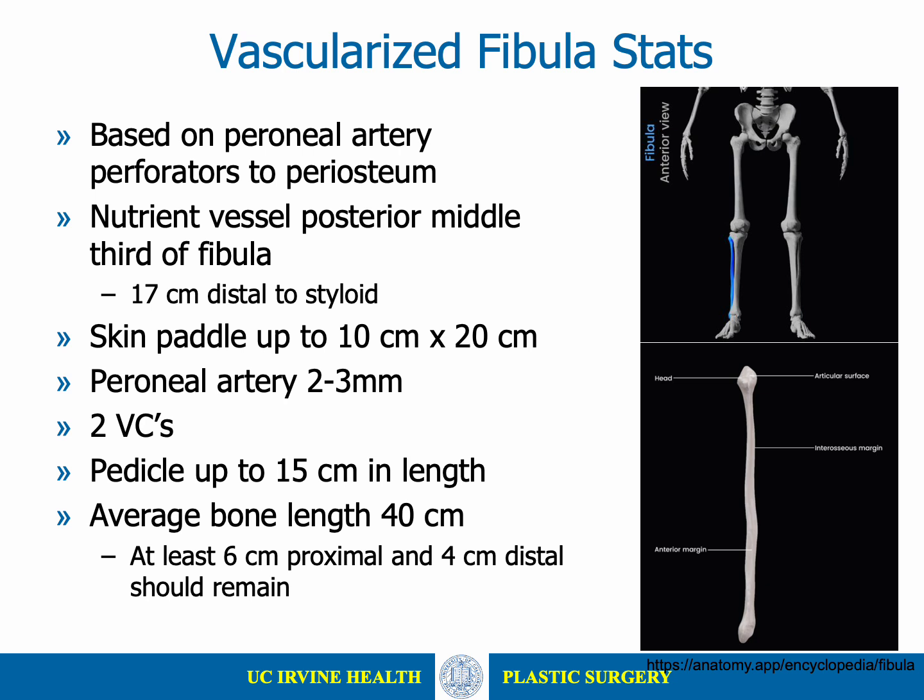The free fibula flap is based on peroneal artery perforators to the periosteum, with the predominant nutrient vessel entering the fibula in the posterior middle third, approximately 17 centimeters distal to the styloid. The flap can be harvested with a skin paddle up to 10 by 20 centimeters. The peroneal artery pedicle is 2 to 3 millimeters in diameter, accompanied by two vena comitantes, and the pedicle length can be up to 15 centimeters. The average fibula length is 40 centimeters, and up to 30 centimeters of bone can be harvested for large defects.